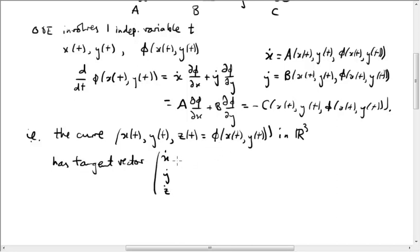So this is equal to, well, x dot is A, y dot is B, and z dot is d by dt of phi, which is minus C.